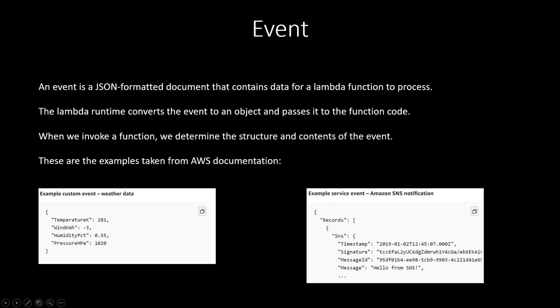Here is another example of a service event — data coming from Amazon SNS notification to the Lambda function. From SNS we are getting the timestamp, signature, message ID, and the actual message. These are examples of events that Lambda can receive and process.